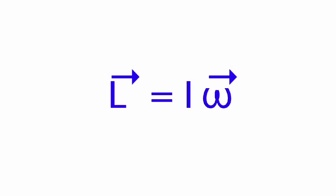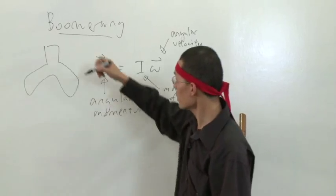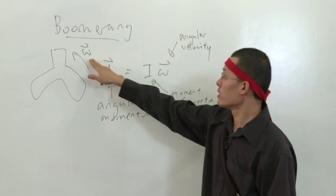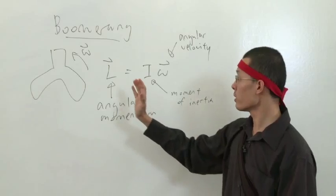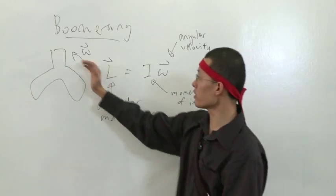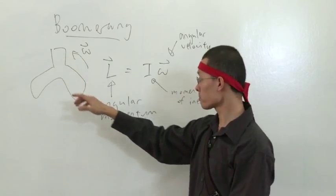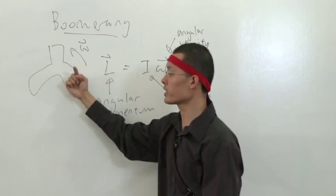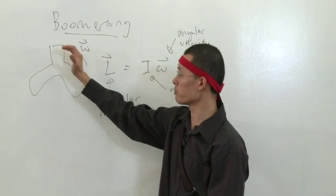You would have noticed that I drew these little arrows on top of L and omega. This is because these are vector quantities. So when the boomerang is spinning this way, the direction of the vector, we use the right hand grip rule. It's just a sign convention. Meaning to say you put your fingers in the direction of the spinning. And the direction that your thumb is pointing is actually the direction of the vector. So in this case, omega and L, both of them, are actually pointing out of the paper. Okay, like this. So use your right hand to grip the direction.